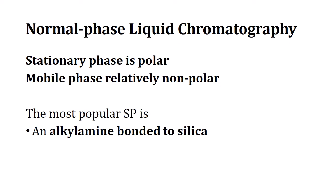When the stationary phase is polar, this is called normal phase liquid chromatography, and the mobile phase is relatively non-polar. One popular stationary phase is alkylamine bonded to silica, where the amine group is responsible for the polarity of the stationary phase.